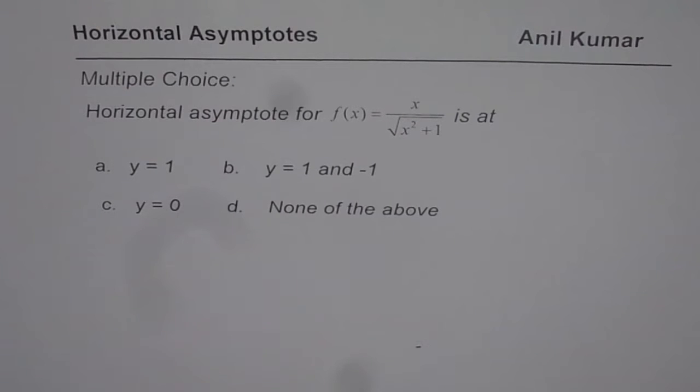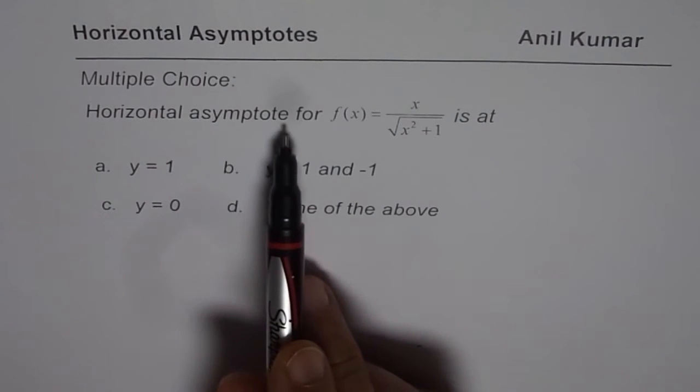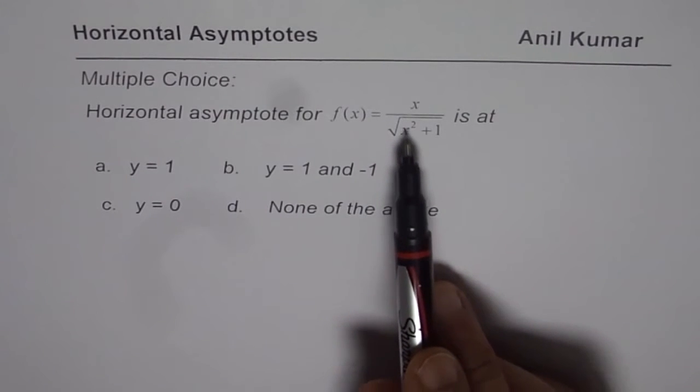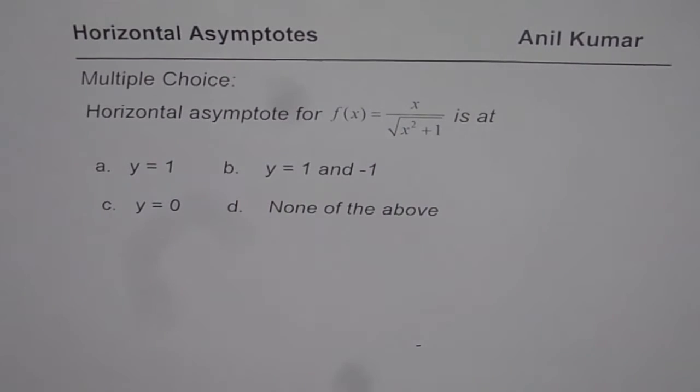You need to find horizontal asymptote for the given function. The question is horizontal asymptote for f(x) = x divided by square root of x squared plus one is at. Four choices are given to you. You can pause the video, answer the question and then look into my suggestions.